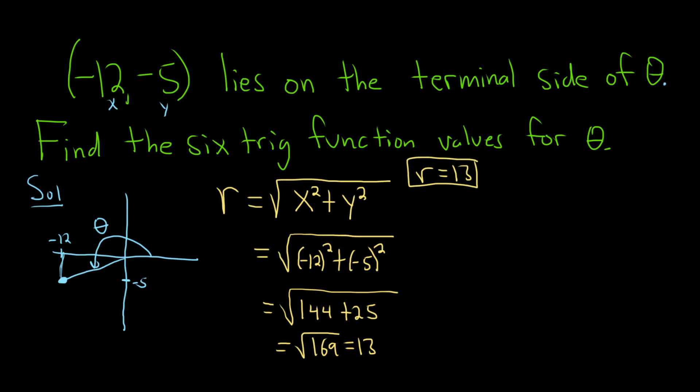Now we can go ahead and find the answers. So let's start with sine. Sine of theta is given by the formula y over r. So in this problem y was negative 5. So we just get negative 5 over r which is 13.